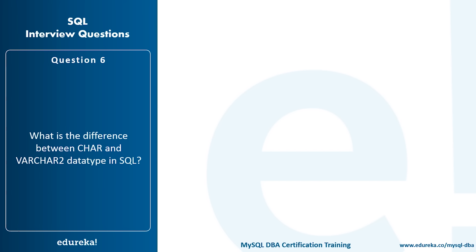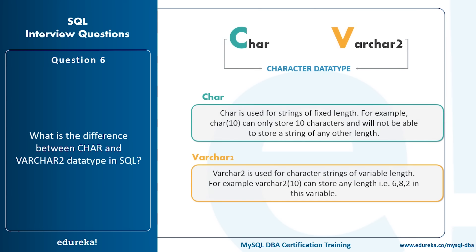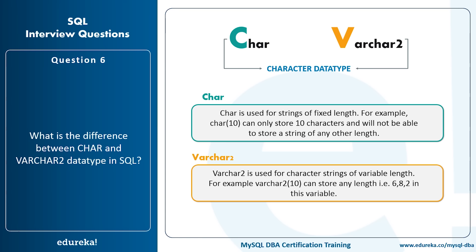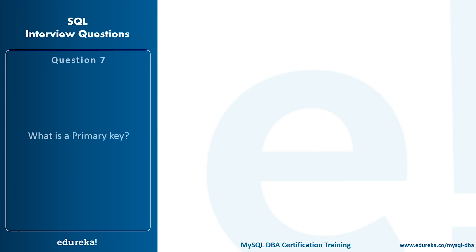What is the difference between CHAR and VARCHAR data types in SQL? Both CHAR and VARCHAR are used for character data, but VARCHAR is used for character strings of variable length, whereas CHAR is used for strings of fixed length. For example, CHAR(10) can only store exactly 10 characters, whereas VARCHAR(10) can store any length up to 10 characters — it depends on the variable.